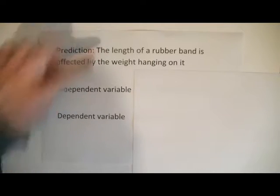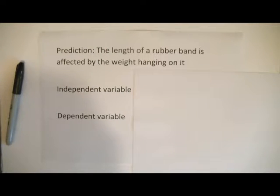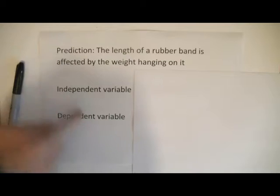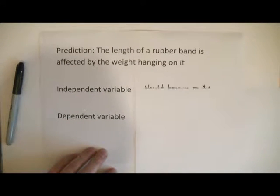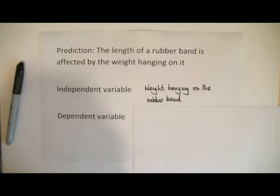Both of those are mentioned in the prediction statement, so the thing I'm going to change is the weight hanging on the rubber band and the thing I'm going to measure each time is the length of the rubber band.